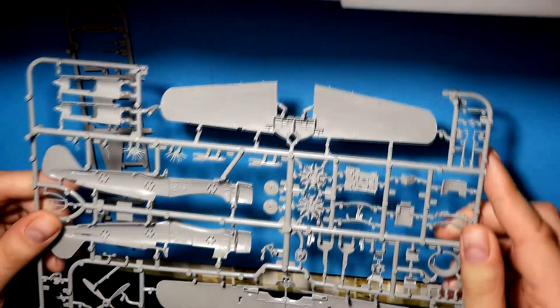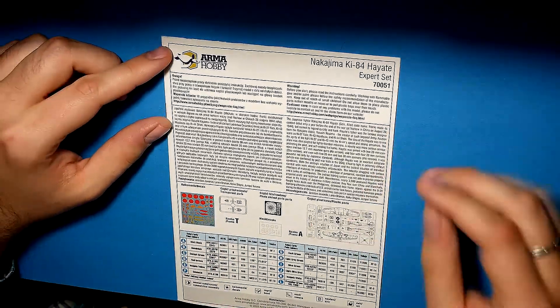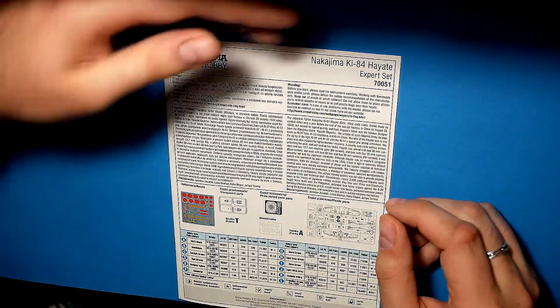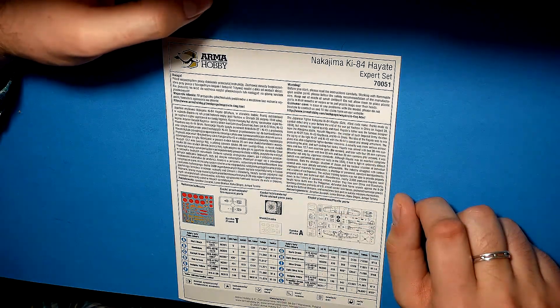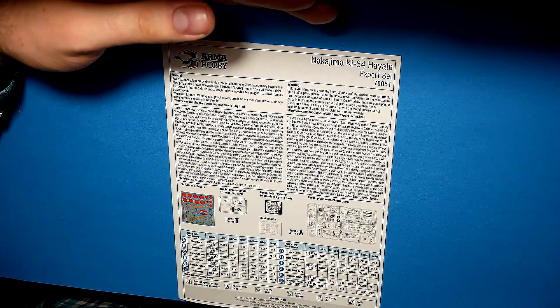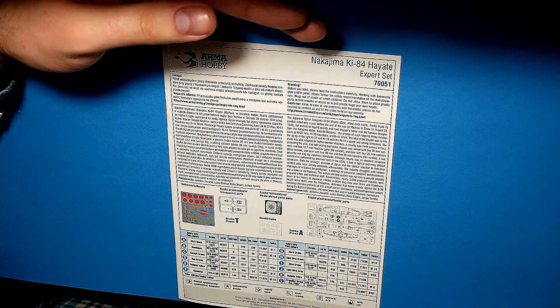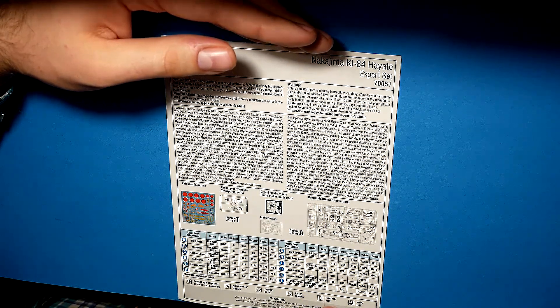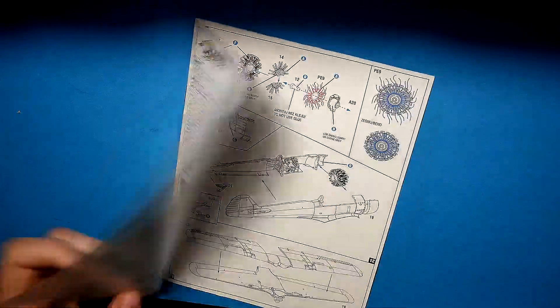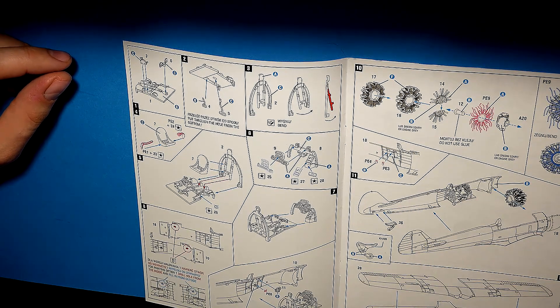Let's check the instruction first. There is text about the fighter in two languages, Polish and English, so you can read it even by stopping that video now if you want. Some additional information about the kit, drawings of the frames and so on. They forgot to mention that second small frame, I don't know why, but happily it's inside the box.